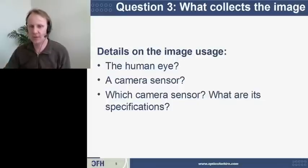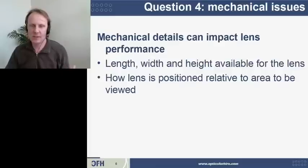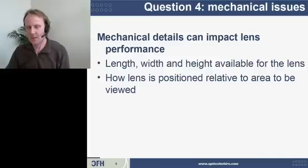All of these will have a big impact on the kinds of lenses put in front of the sensor or the human eye. The fourth issue you should prepare for is any mechanical limitations. It very often happens that people are space constrained — they only have space for a certain number of elements, a certain size — and that can have a big impact on how the optical system performs. Also, how the lens is positioned relative to the area that you're looking at; sometimes it can be at an angle or off to the side.